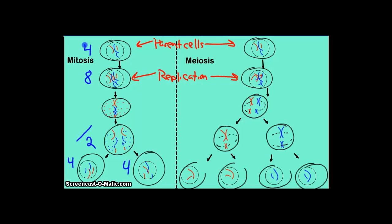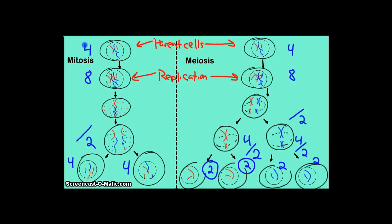In meiosis, the same thing occurred: four chromosomes in the original cell, eight after DNA replication. The first cell division divides it into two, giving four chromosomes in each cell. Those cells are then divided again in half to create sex cells, which have half the number of chromosomes that the parent did — two chromosomes in each one instead of four.